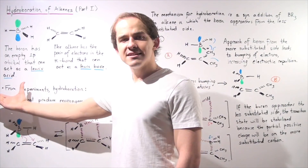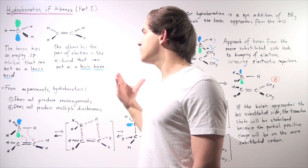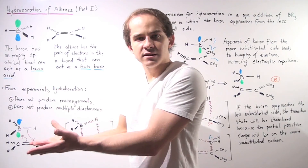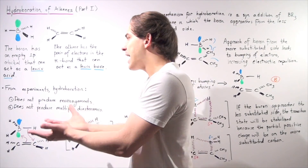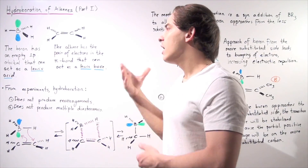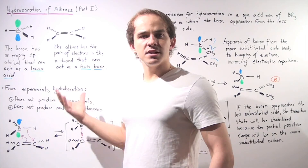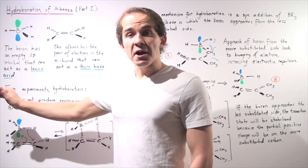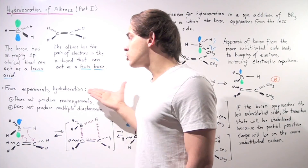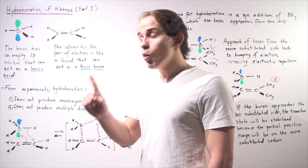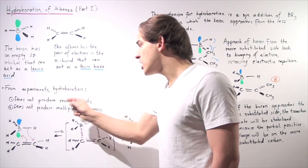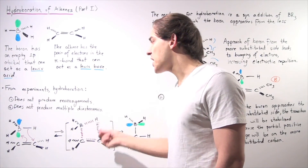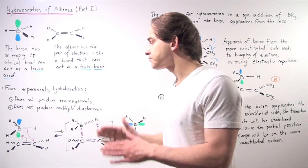So here we have a Lewis acid and a Lewis base. When we react these two molecules, we should get some type of reaction — a Lewis base and Lewis acid reaction. From experiments, we know that hydroboration: one, does not produce rearrangements, and two, does not produce multiple diastereomers.